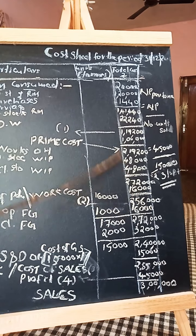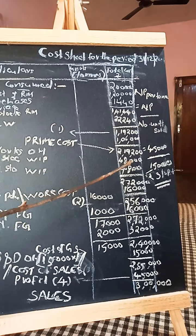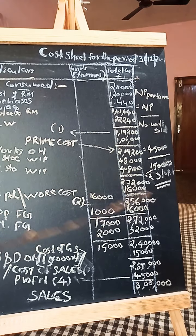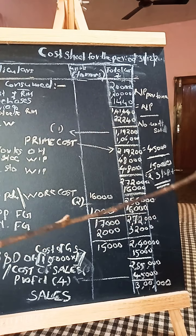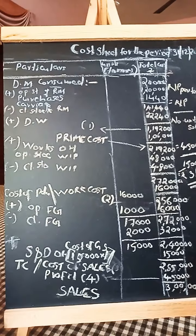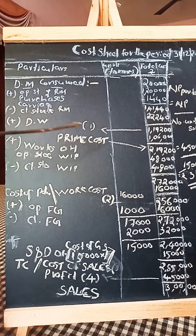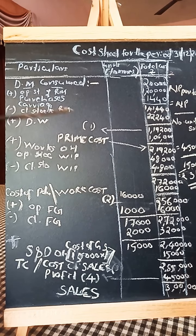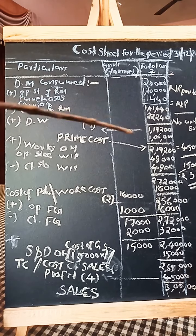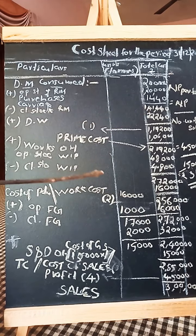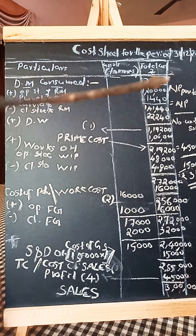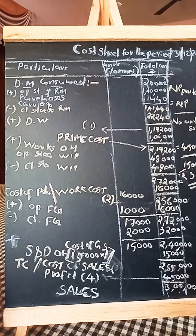In this way, we are able to calculate the total cost of production, cost per unit, total net profit, and net profit per unit by preparing a cost sheet — including prime cost and total cost. I hope you are all clear with my explanation and this solution. If you like this video, please subscribe for more information. Thank you.